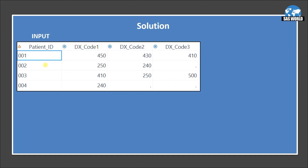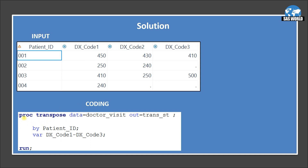This is the same input dataset we discussed. Now let's look at the code. We use PROC TRANSPOSE with input dataset doctor_visit and output dataset trans_st. The BY variable is patient_id — meaning the dataset must be sorted by patient_id, which it already is (01, 2, 3, 4), so no additional sorting is needed. When we use BY patient_id, that variable will not be transposed; only new observations will be added to it. The variables we want to transpose are specified using the VAR statement: dx_code_1 to dx_code_3 using a range operator, so we don't need to list all three separately.